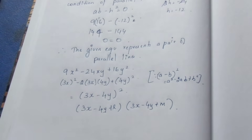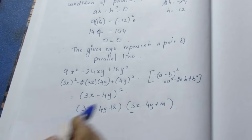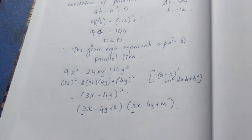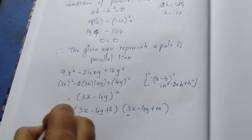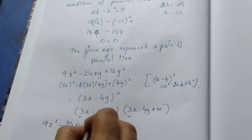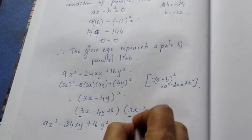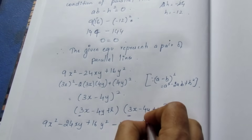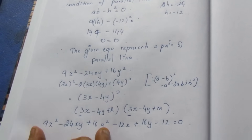Now we match coefficients from the original equation 9x² - 24xy + 16y² - 12x + 16y - 12 = 0 to identify the constants l and m. Looking at the x term and y term separately to extract the values.